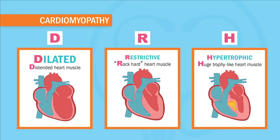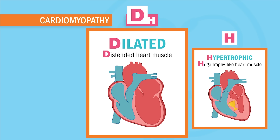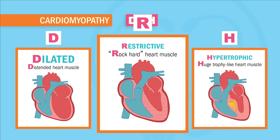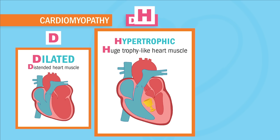D stands for dilated cardiomyopathy — remember D for distended and thin heart muscles, kind of like a balloon. R is for restrictive cardiomyopathy — remember R for rock-hard rigid cardiac muscle. And H is for hypertrophic — remember huge trophy-like big and thick heart muscles.